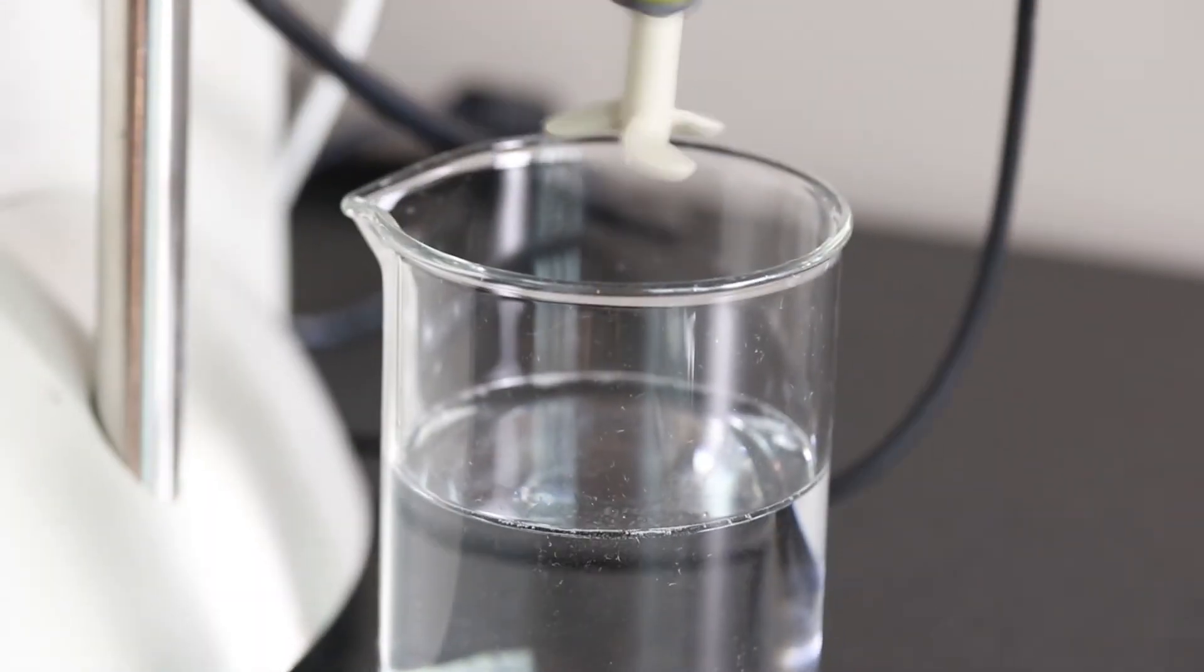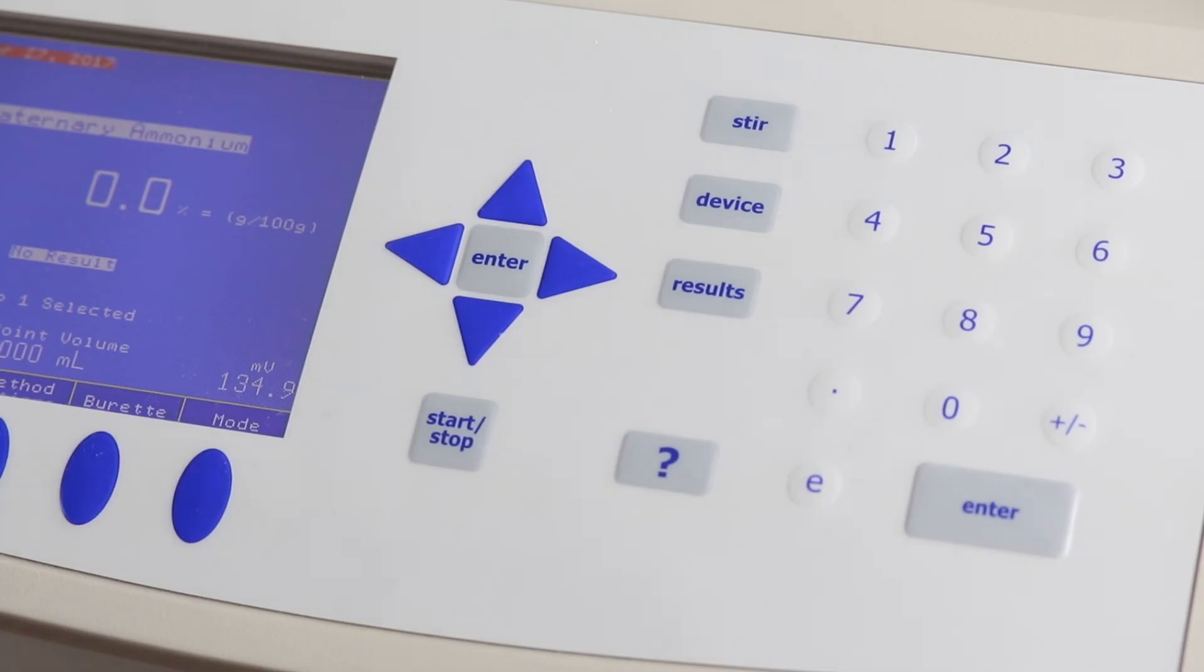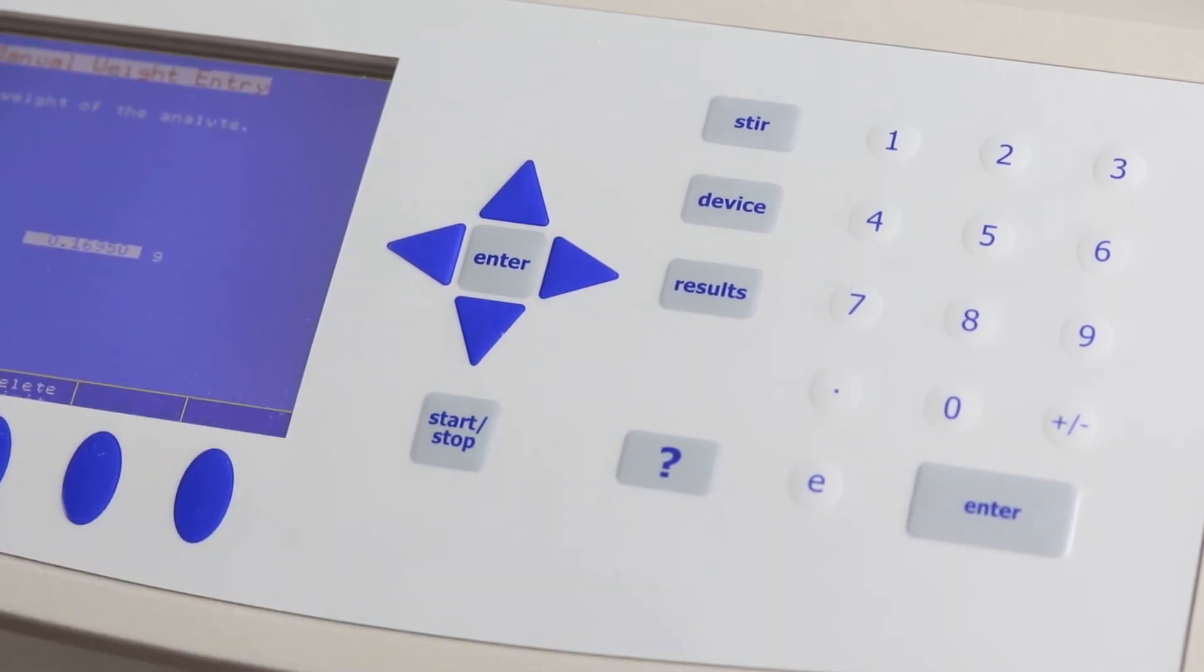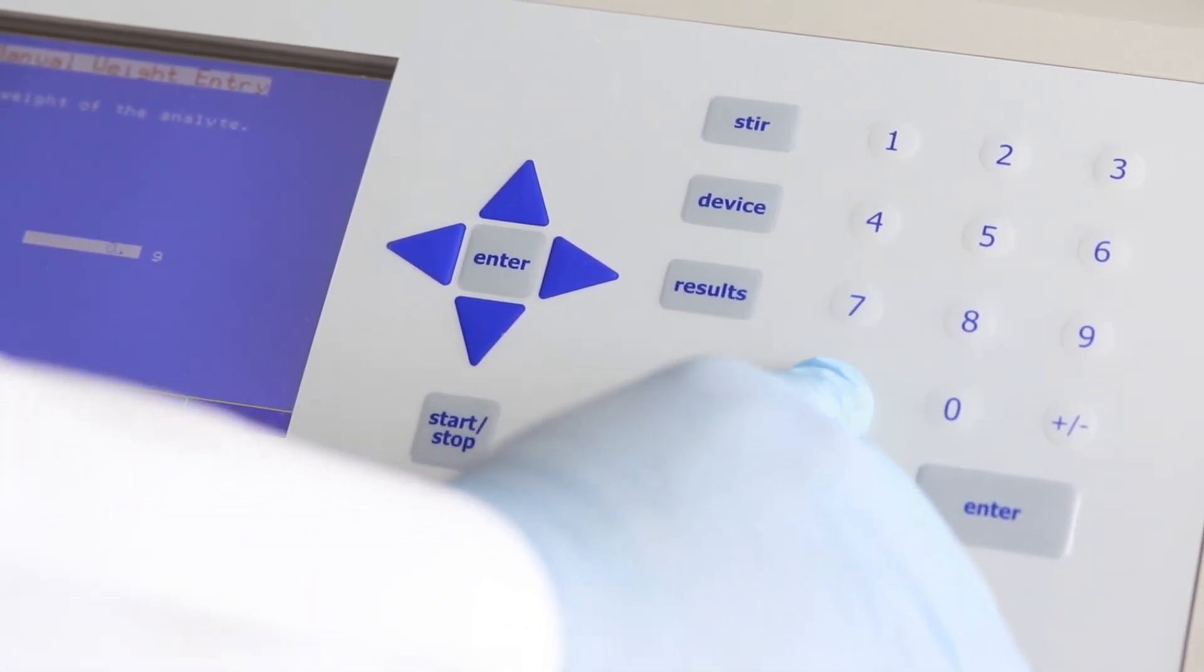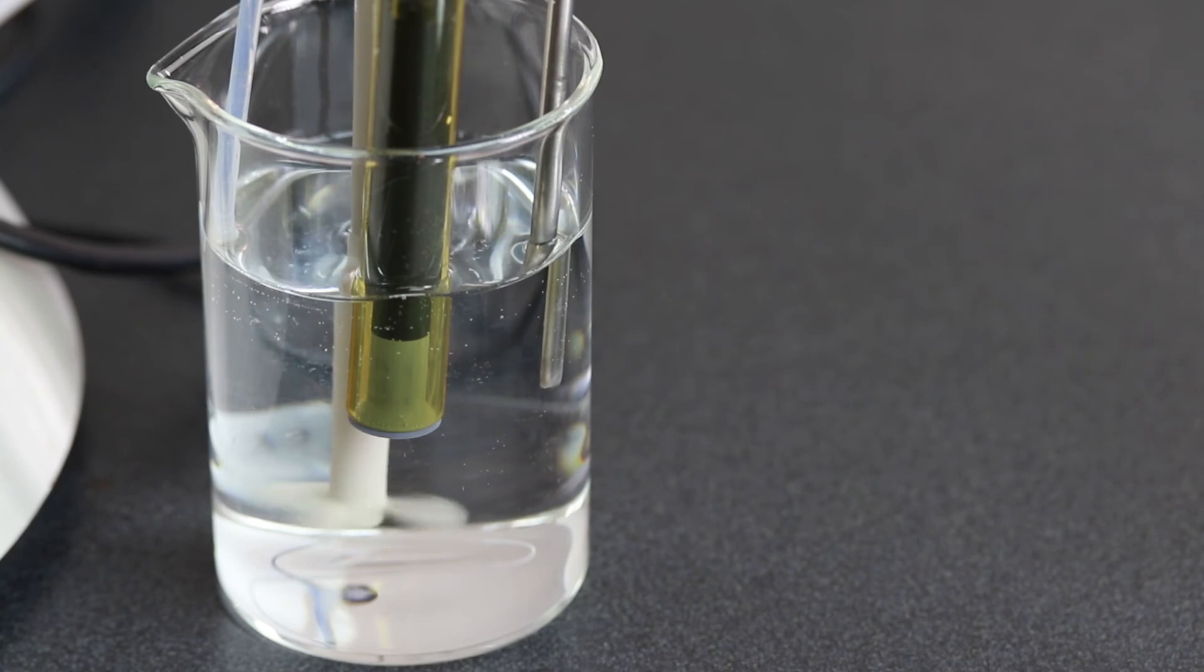Next, I'll submerge the electrode and stirrer into the sample beaker and press start. Again, I'll enter the weight of the surfactant sample and press enter. And now, we can walk away while the titrator does the rest.